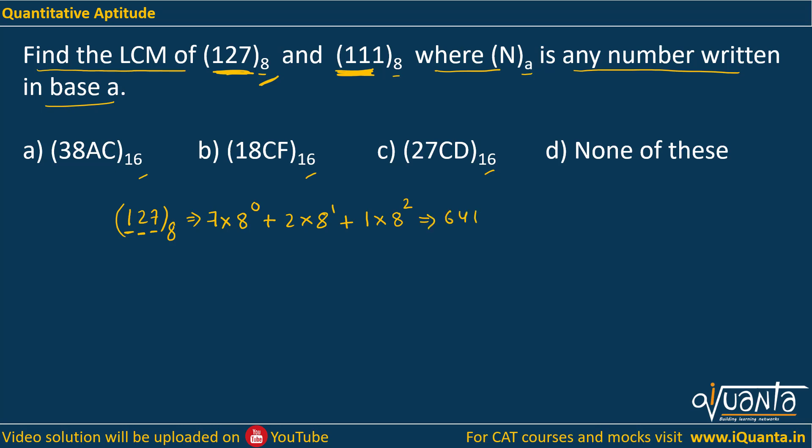Similarly, we'll convert 111 to decimal. It will be 1×8^0 + 1×8^1 + 1×8^2, which gives us 64 + 8 + 1. This equals 73. Now we have both numbers in decimal.